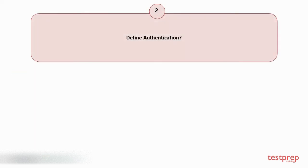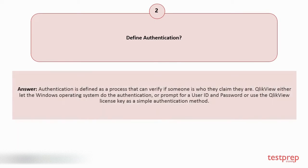Question number 2: Define authentication? Authentication is defined as a process that can verify if someone is who they claim they are. QlikView either lets the Windows operating system do the authentication, or prompts for a user ID and password, or uses the QlikView license key as a simple authentication method.